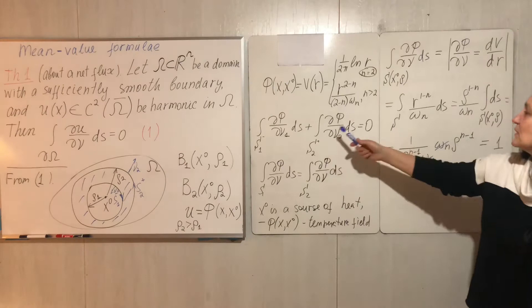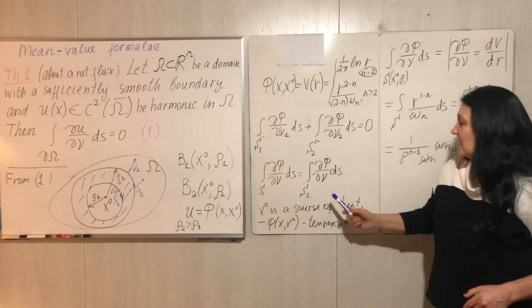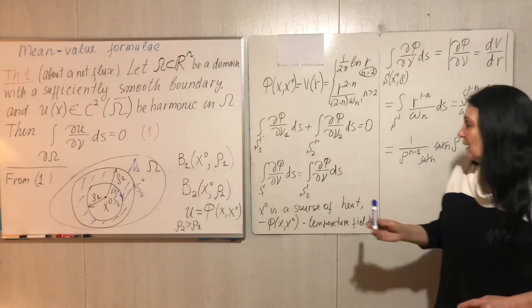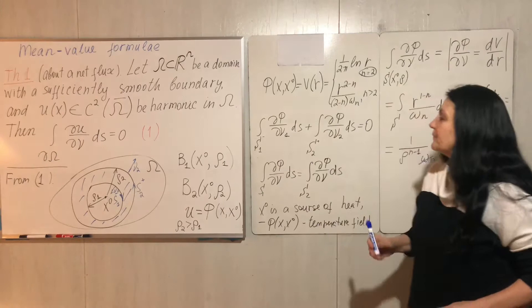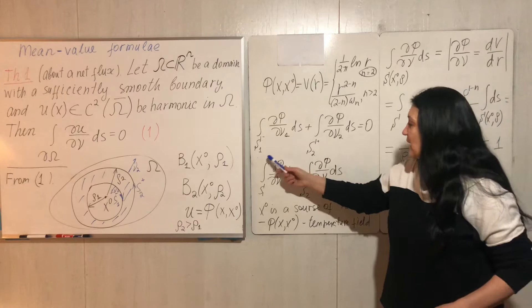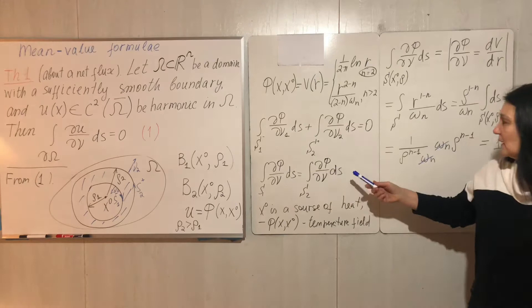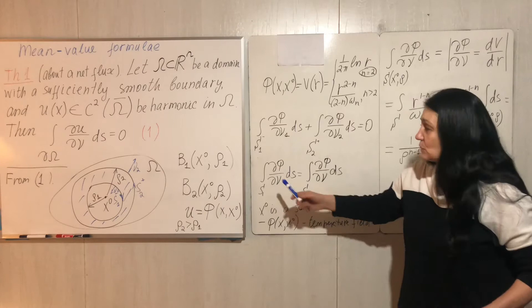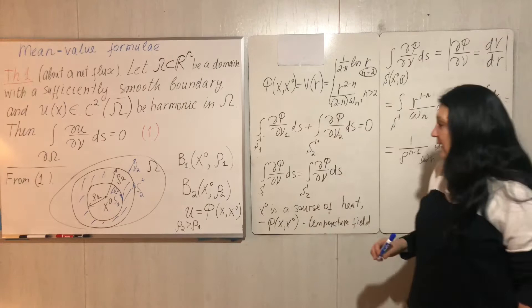By moving one of the integrals to the other side and changing direction to counterclockwise with the normal facing outward from center, we can see that the flux of phi — our fundamental solution — across any surface would be the same, would be constant. It does not depend on the radius of our ball centered at point x₀.